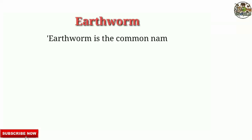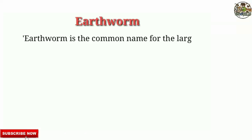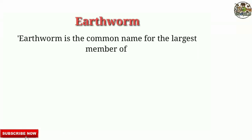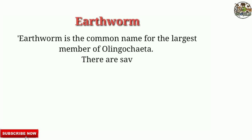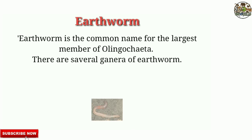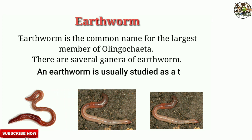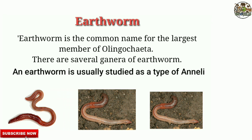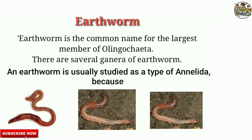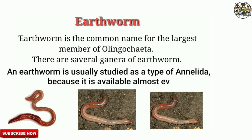Earthworm is the common name for the largest member of Oligochaeta. There are several genera of earthworm. An earthworm is usually studied as a type of annelid because it is available almost everywhere.